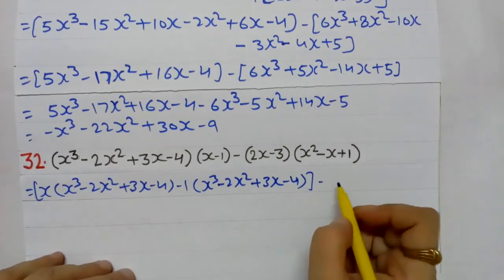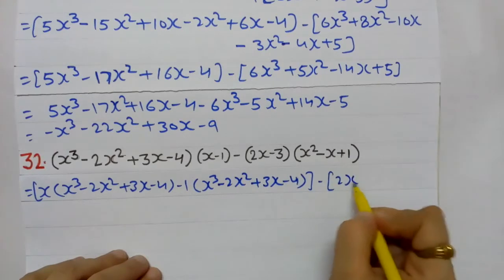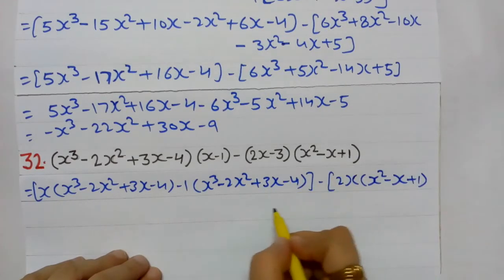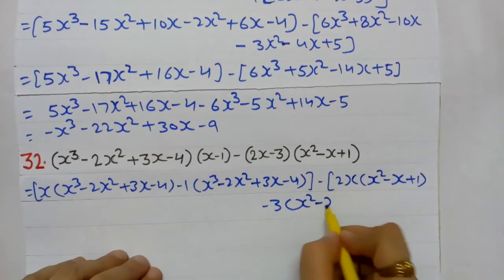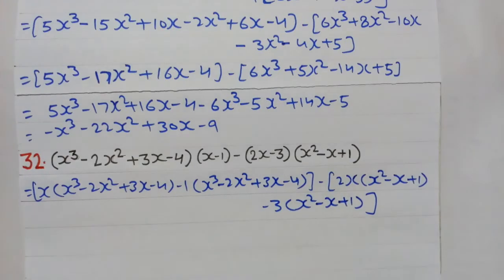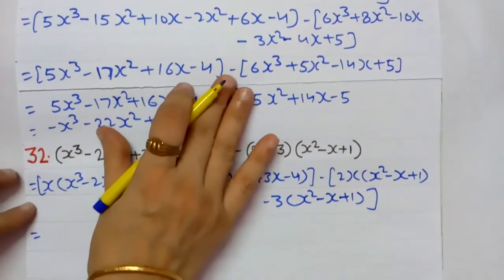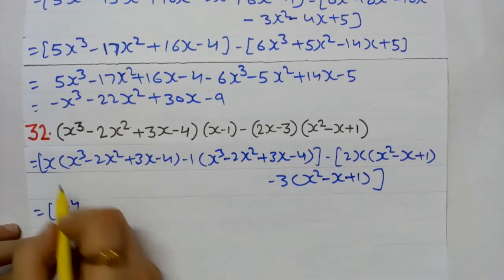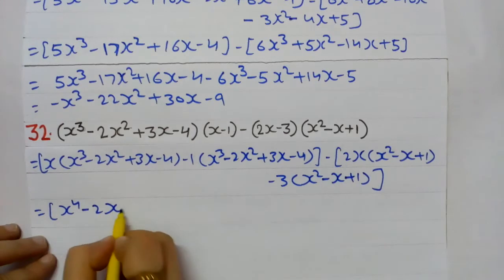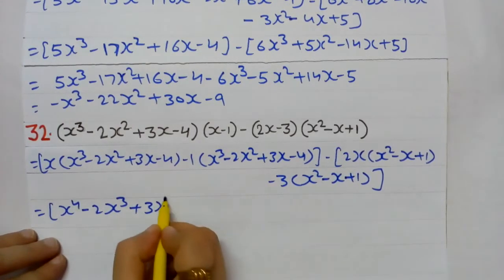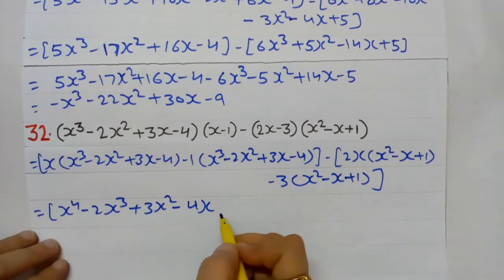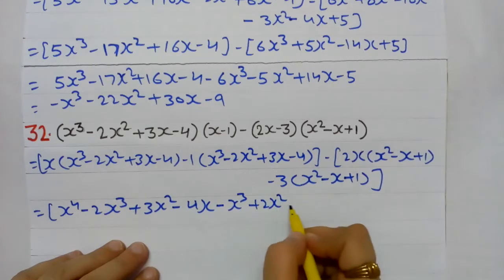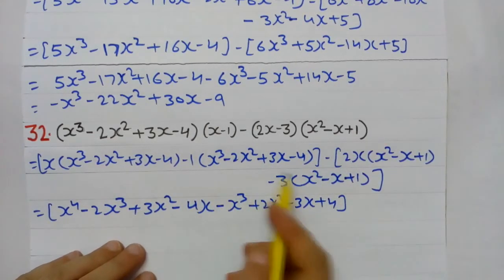Here also, there is a minus. I break the first bracket: 2x multiplied by the second bracket (x² − x + 1), then minus 3 multiplied by the second bracket (x² − x + 1). Now multiplying in the first group: x × x³ = x⁴, x × (−2x²) = −2x³, 3x × x = 3x², minus 4 × x = −4x. Multiplying by minus 1: sign changes — minus x³, plus 2x², minus 3x, plus 4.